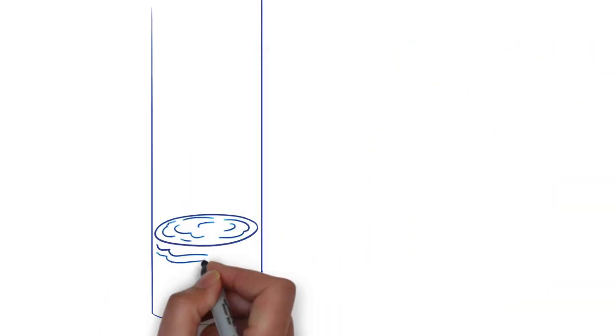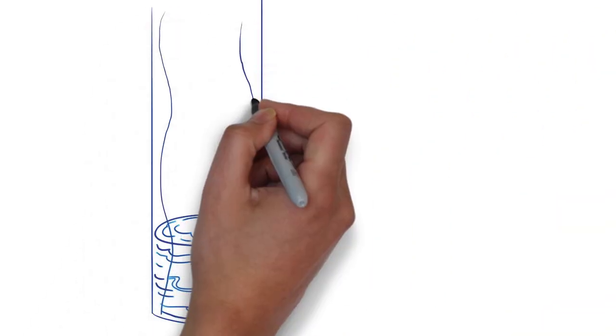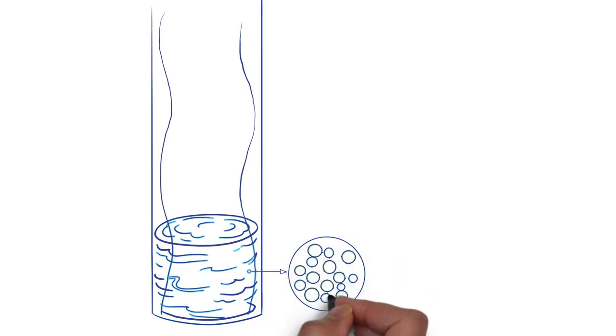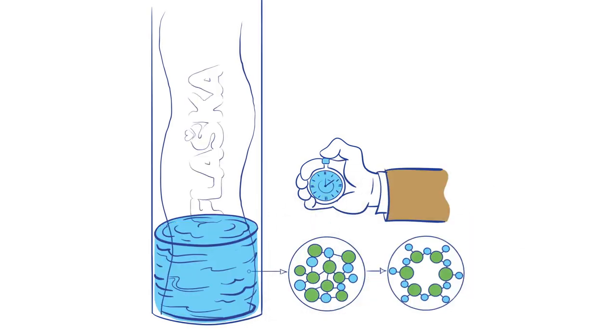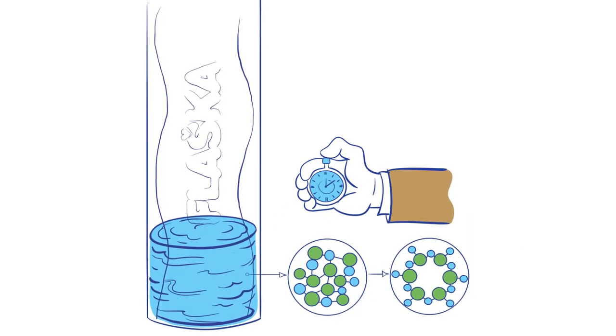So by applying the TPS procedure onto the flasca bottle, we bring the vibrational structure of the water closer to the structure of spring water. After five minutes in flasca, the structure of the water will change.